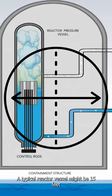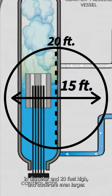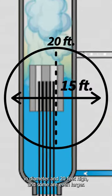A typical reactor vessel might be 15 feet in diameter and 20 feet high, and some are even larger.